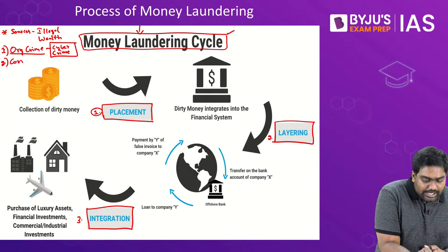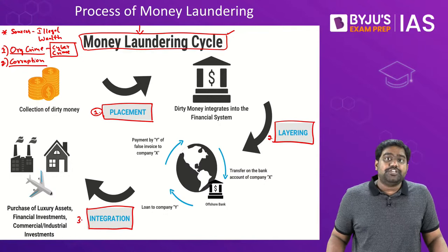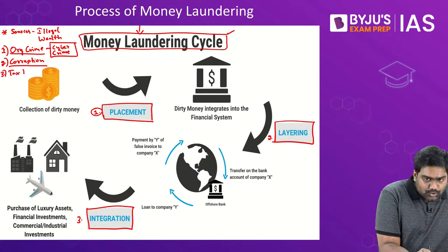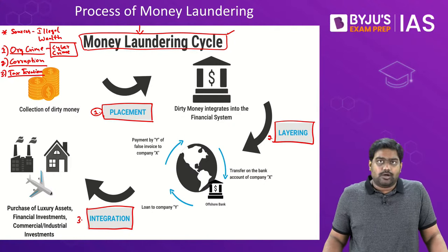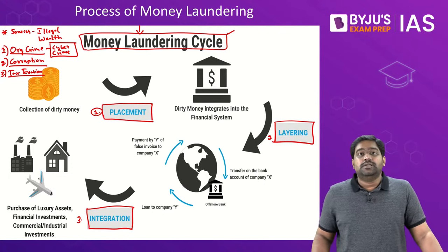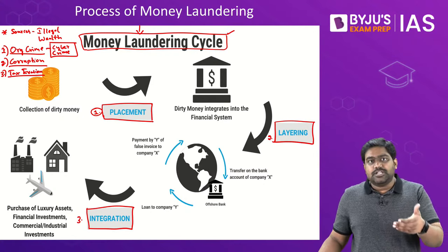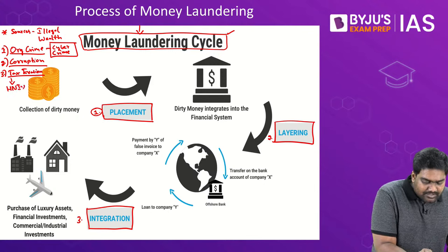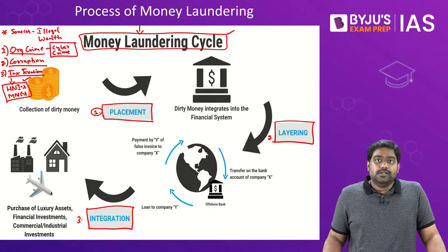Apart from organized crime, another source of black money is corruption within the government — if ministers, politicians, or bureaucrats are taking bribes, all that wealth is illegally generated. Black money is also generated through tax evasion, where high net worth individuals like celebrities or sports stars, and even large corporations or multinationals, conceal their profits and income from the government to avoid paying taxes. That concealed wealth essentially becomes black money.